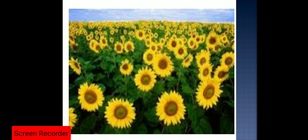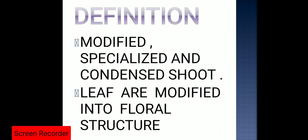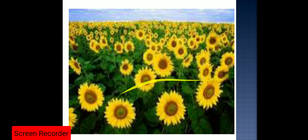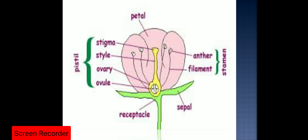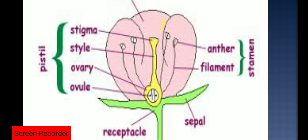In this chapter we have to study about flowers — what is a flower. A flower is a modified, specialized, and condensed shoot. 'Modified' means it is structurally as well as functionally advanced. In a flower, the leaves are modified into floral structures, meaning the leaves have a specialized structure and a specialized function. All the parts or all the whorls of the flower are in the form of a condensed shoot.